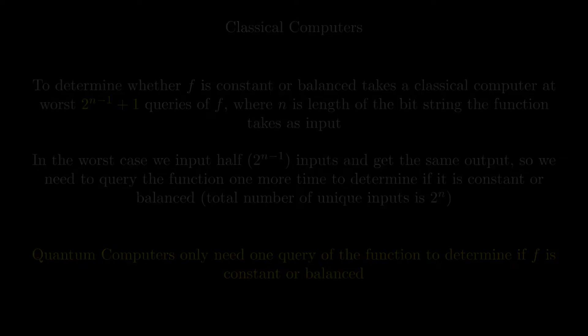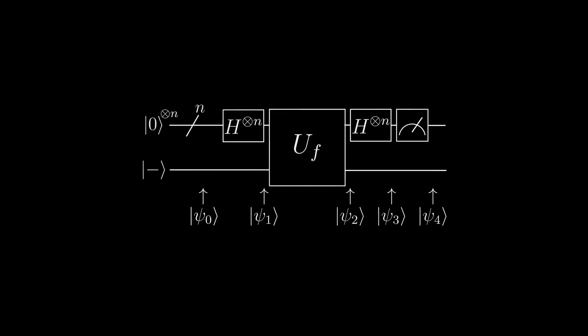Here is the circuit for the algorithm. This line going through the circuit represents n qubits, and the Hadamard gates tensored n times represent n Hadamard gates, each one being applied to one of the n qubits.